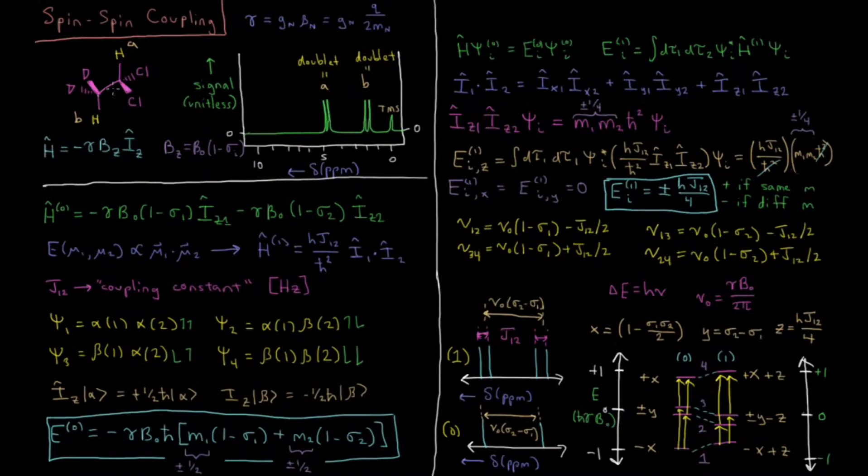But for those which are close enough to each other inside of a molecule, usually within three chemical bonds of each other, except for in special cases where they're within four chemical bonds of each other, in those circumstances you can get what's called spin-spin coupling.